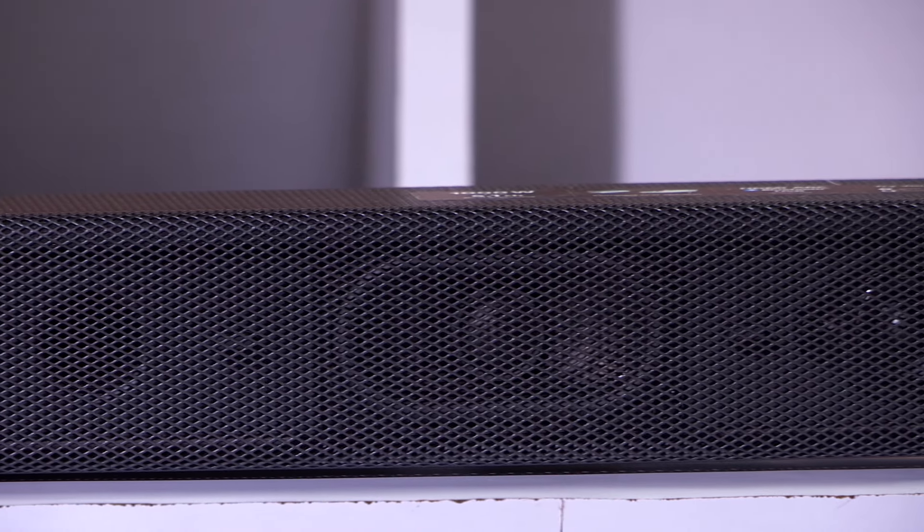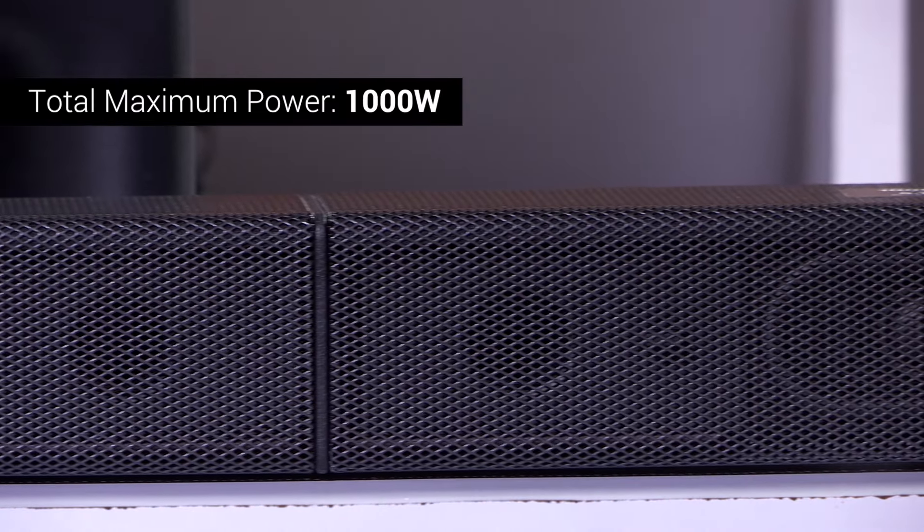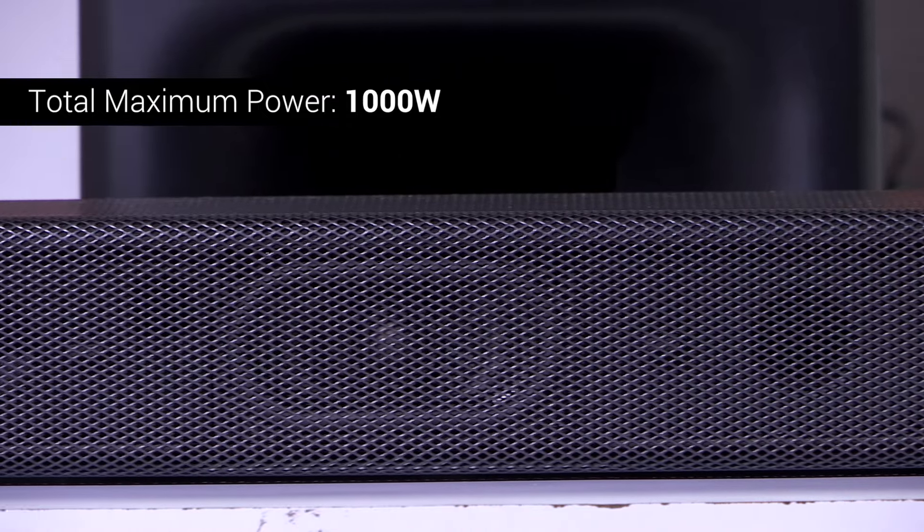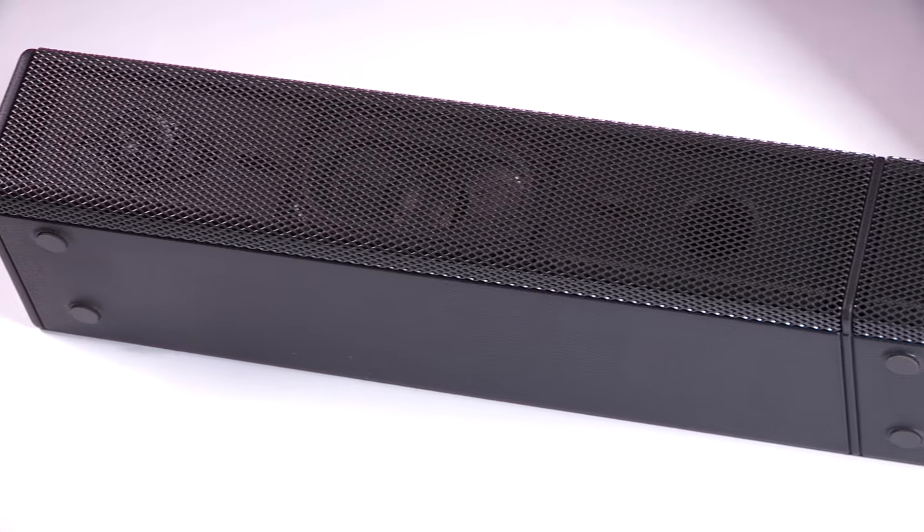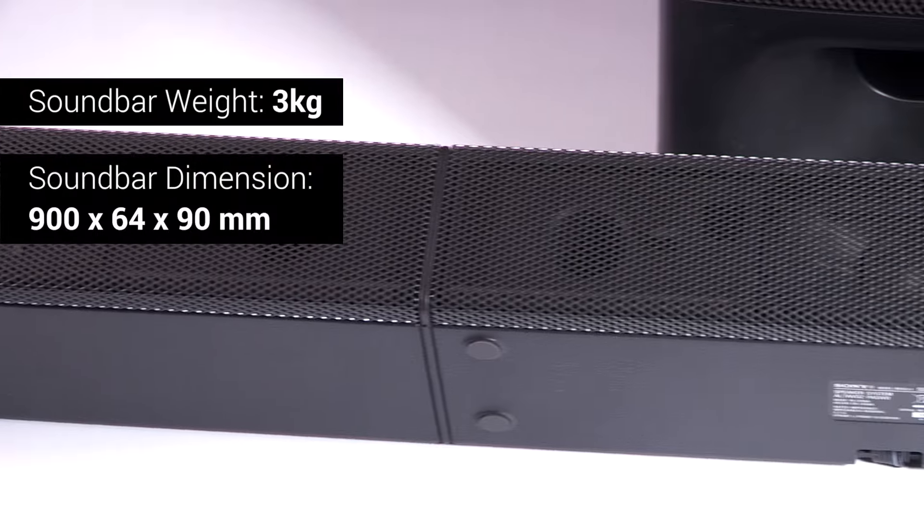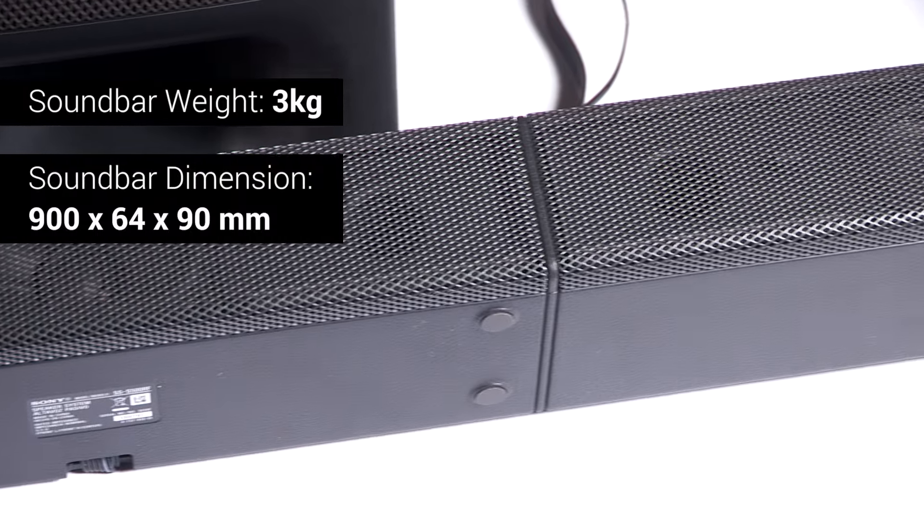The soundbar is quite well built. It has a metallic mesh grille covering the front, protecting the drivers. You can see the drivers through the grille. At the bottom, it has eight rubber feet which give it good grip when kept on the table. You can also wall mount the soundbar if you like.